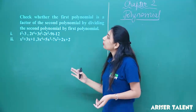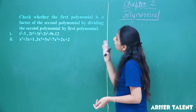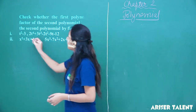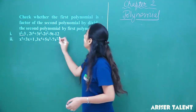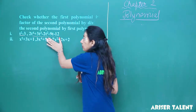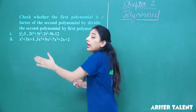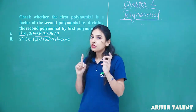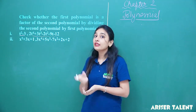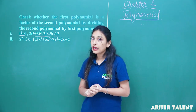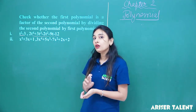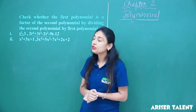Check whether the first polynomial is a factor of the second polynomial by dividing the second polynomial by the first. If it is a factor, you will get 0 as the remainder. If the remainder is not 0, then the first polynomial is not a factor of the other.